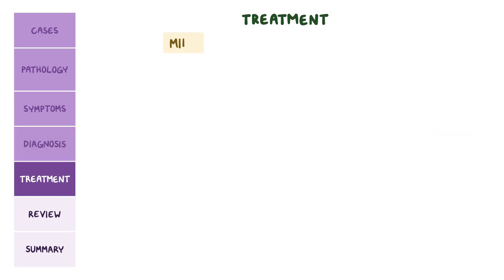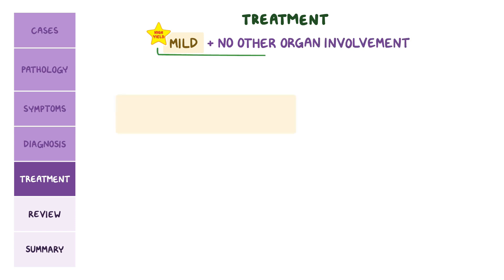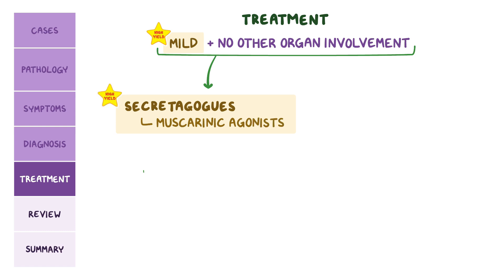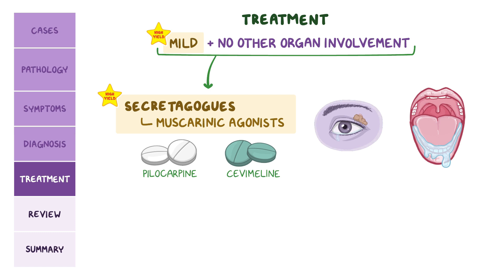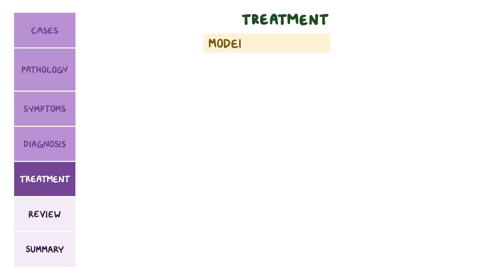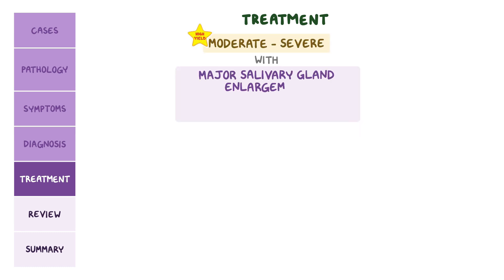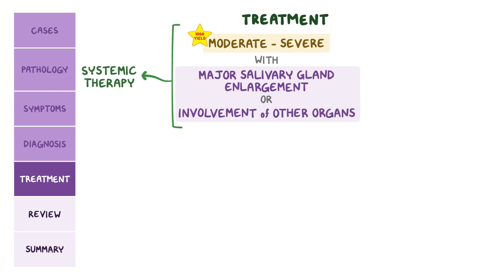For treatment, individuals with mild Sjogren's syndrome without other organ involvement can be treated with secretagogues. This includes muscarinic agonists such as pilocarpine and cevimeline, that can increase the production of saliva and tears. Artificial tears for eye dryness can also help relieve symptoms. Individuals with moderate to severe Sjogren's syndrome with major salivary gland enlargement or involvement of other organs generally require systemic medical therapy. Major salivary glandular enlargement due to inflammation can be treated with glucocorticoids.